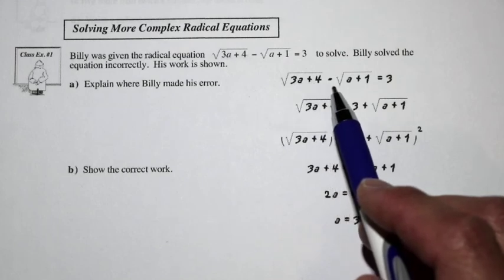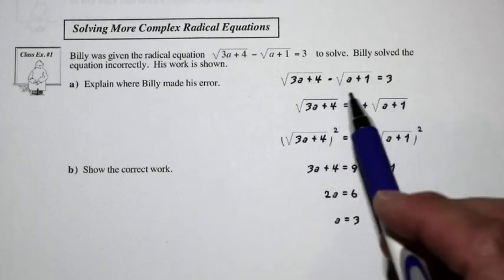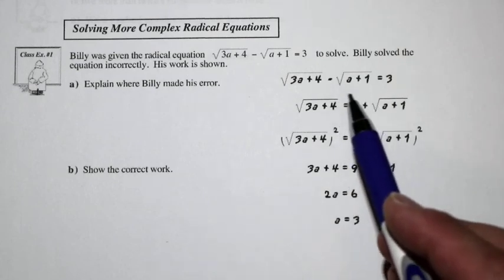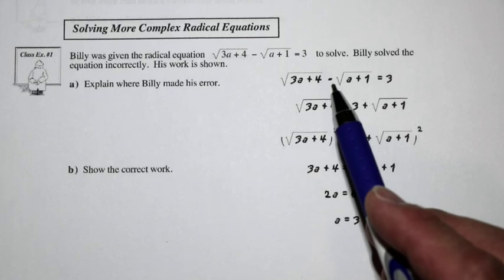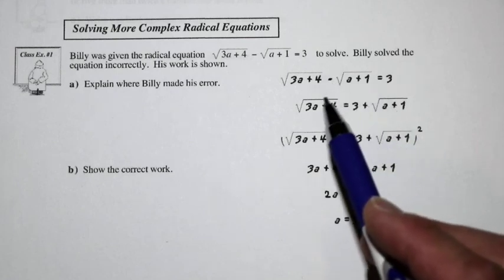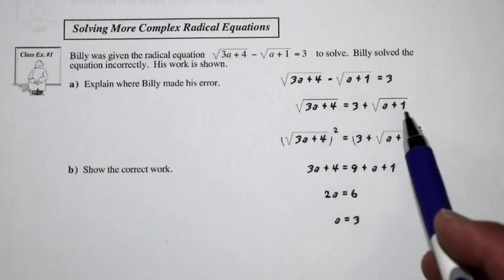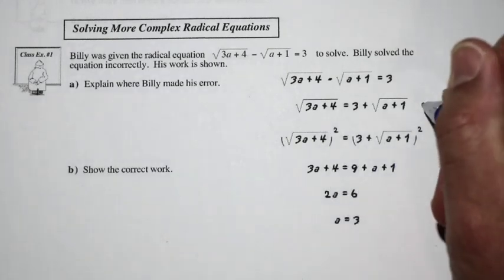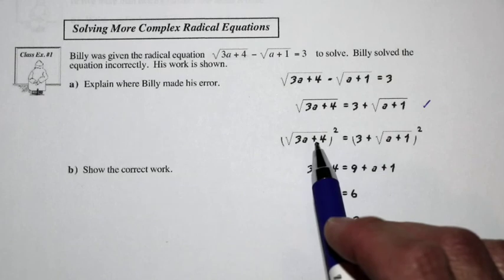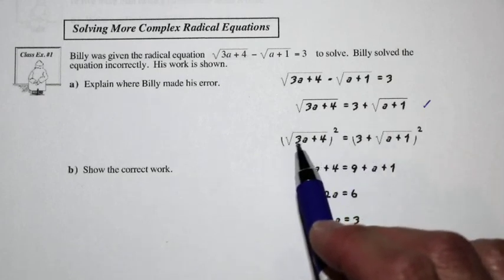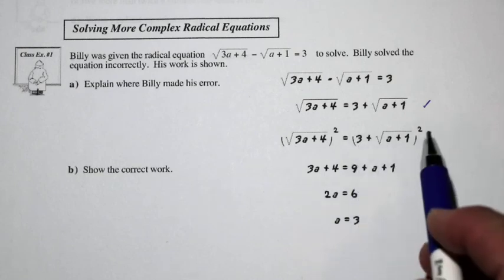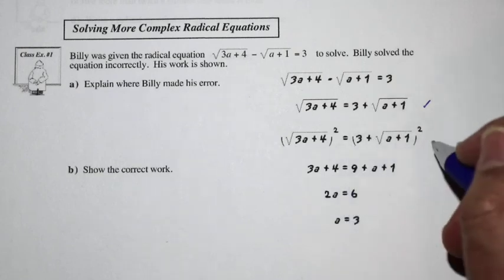We've got the square root of 3a plus 4 minus the square root of a plus 1 equals 3. We're isolating one of the radicals, and that looks like it's okay. We had to do that by adding the square root of a plus 1 to both sides — it disappears from the left side but is added to the right side. So that step looks okay. It looks like he's going to square both sides, and he has a square on the left side and the square on the right side. That step looks okay.